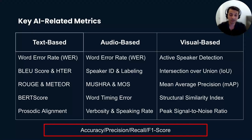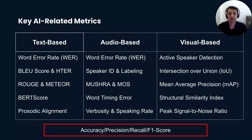These metrics are important specifically for tasks like sentiment analysis, classification, or information extraction. But in addition to these typical metrics, I believe we should use more use-case-specific metrics for our product. That's why we need to go through these three categories one by one.